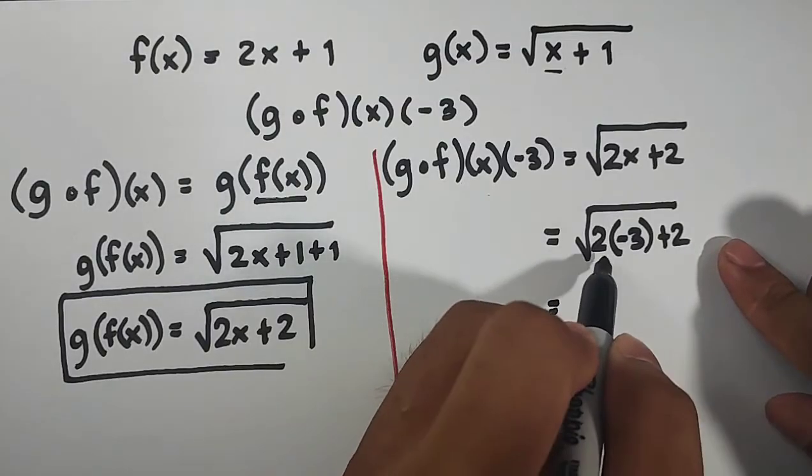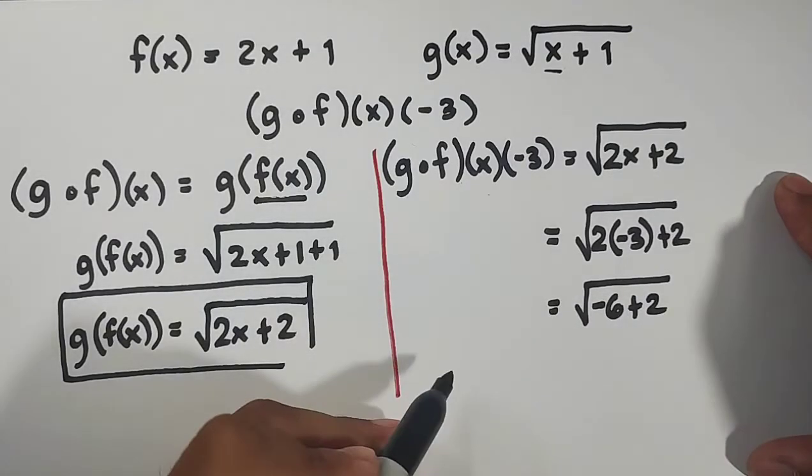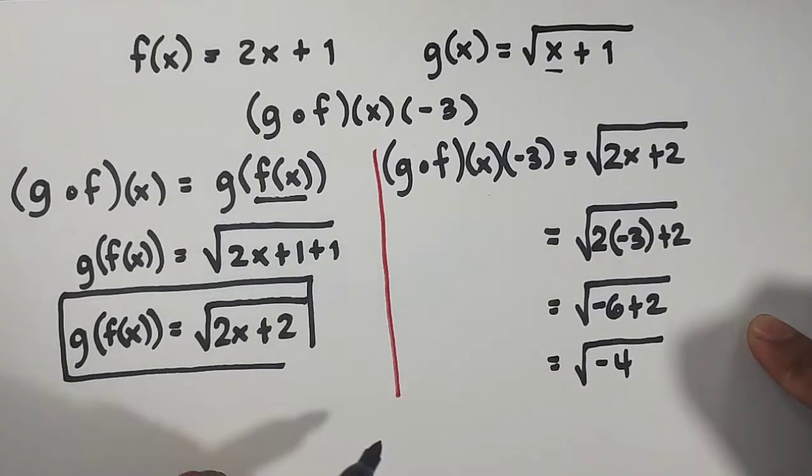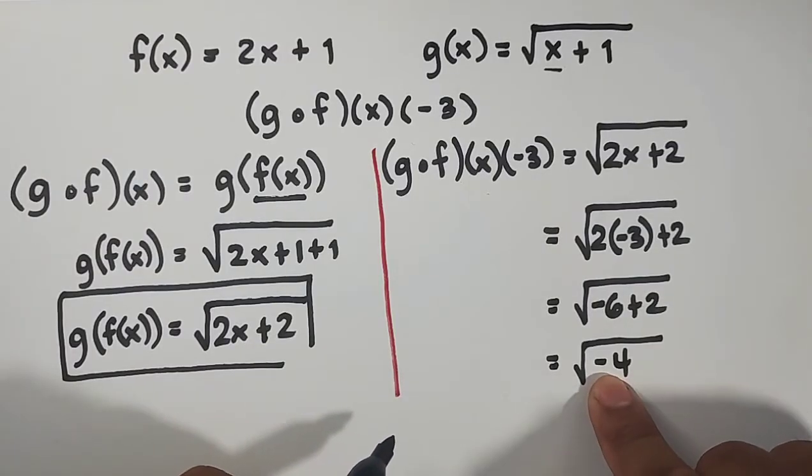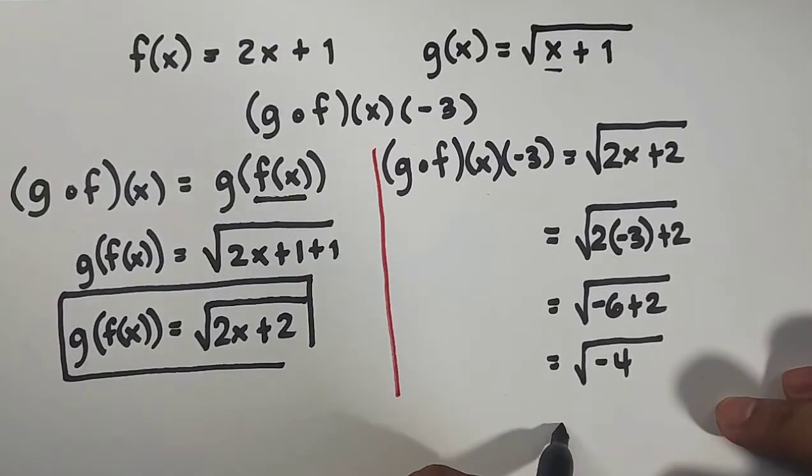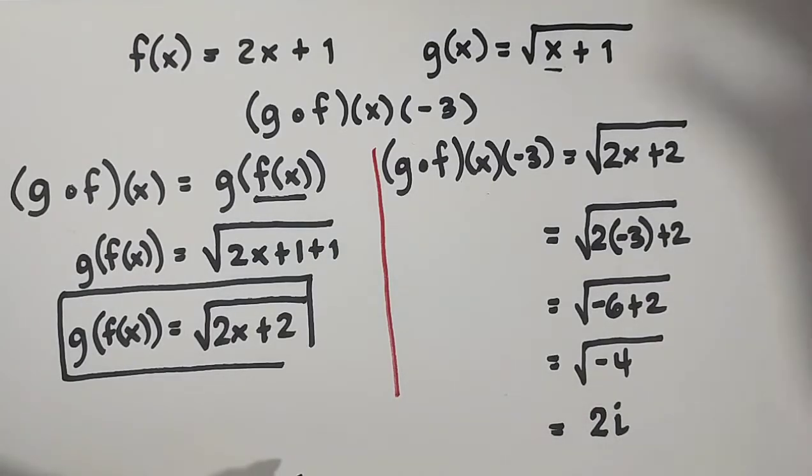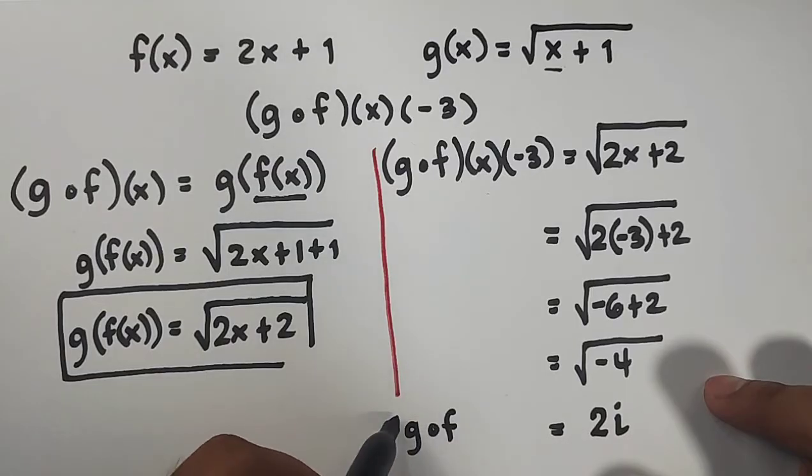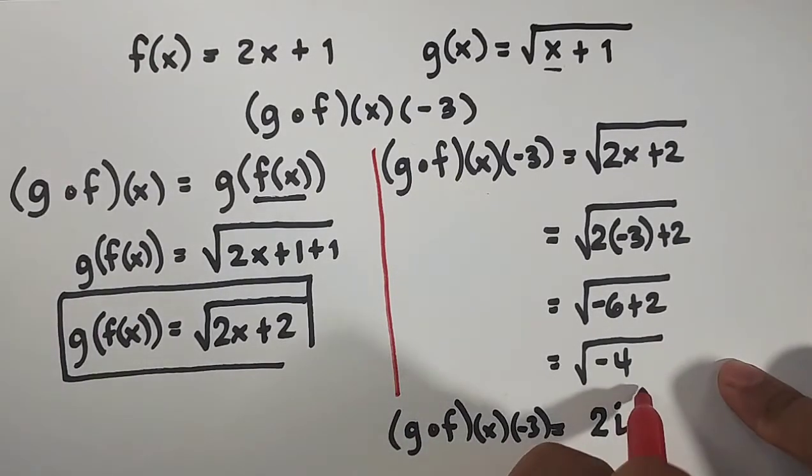When you simplify this, it will become 2 times negative 3. Definitely, that is negative 6 plus 2. And simplify natin itong dalawang integer sa loob. It will become the square root of negative 4. So we're not yet done, guys. Don't make a mistake here. The square root of negative 4 is not 2. Since this one is negative, ang makukuha natin dito ay imaginary number. Or in other words, the square root of negative 4 is simply 2i. You can use your calculator. Search na sa Google, what is the square root of negative 4? That will give you 2 square root of i. So meaning, your g of f of x of negative 3 is simply equal to 2i.